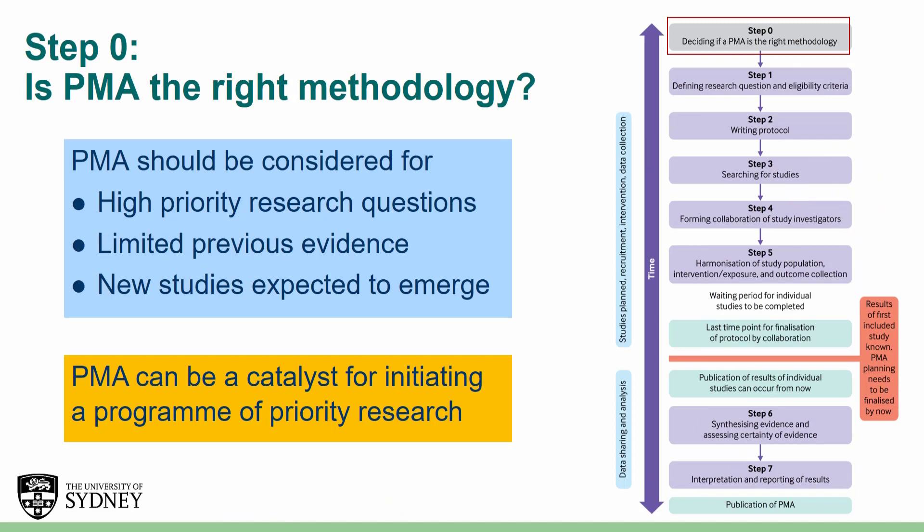Before starting the PMA process, a decision needs to be made on whether PMA is the right methodology for the question at hand. Generally, PMA should be considered for high-priority research questions for which limited previous evidence exists and for which new studies are expected to emerge. This does not need to be a passive process, but instead can be an active catalyst for a joint program of priority research to be undertaken by a group of researchers.